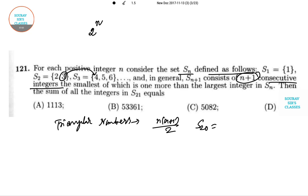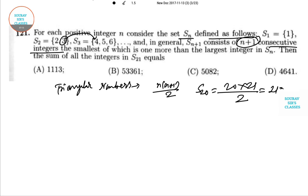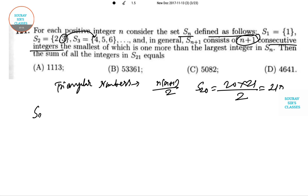Therefore, the required summation for S_21 will start from 211, 212, and so on. There will be 21 terms.